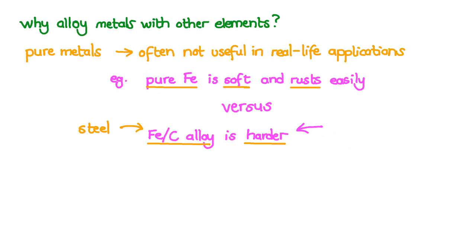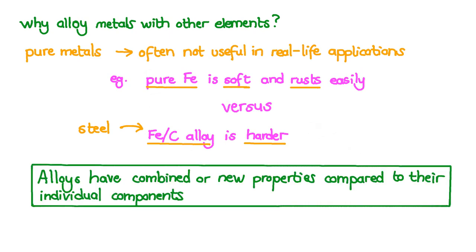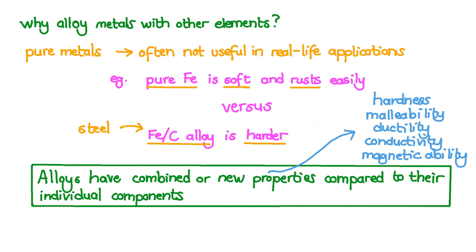Steel is much harder than pure iron. Alloying changes the properties of a metal. We could say that alloys have combined or new properties compared to that of their individual components. The changes in properties that result from alloying include changes in hardness, strength or toughness, changes in malleability, ductility, electrical and thermal conductivity as well as magnetic properties.